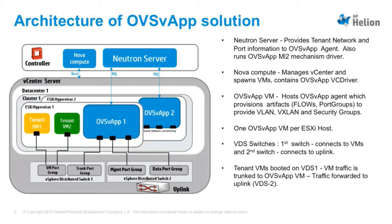As part of the OVSVF VM, it creates a port group in the vCenter and creates flows for the tenant VMs. There should be one OVS VM running on every ESXi host. We have two deployment use cases: one for VXLAN networks and another for VLAN networks. For VLAN networks, there have to be two DVS switches available per data center. The first DVS switch should have a trunk port group connected to the OVSVF VM, and for the management and data port group, we have another DVS switch. A port group is created on the first DVS switch for tenant VMs. For the VLAN case, two DVS switches must be deployed on a per-cluster basis.